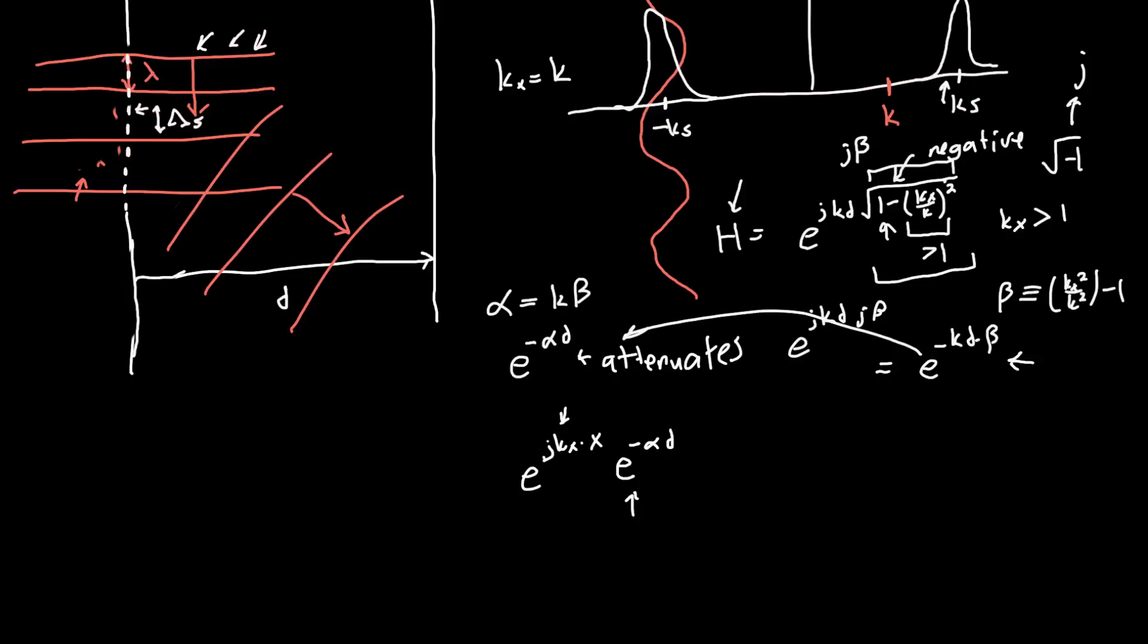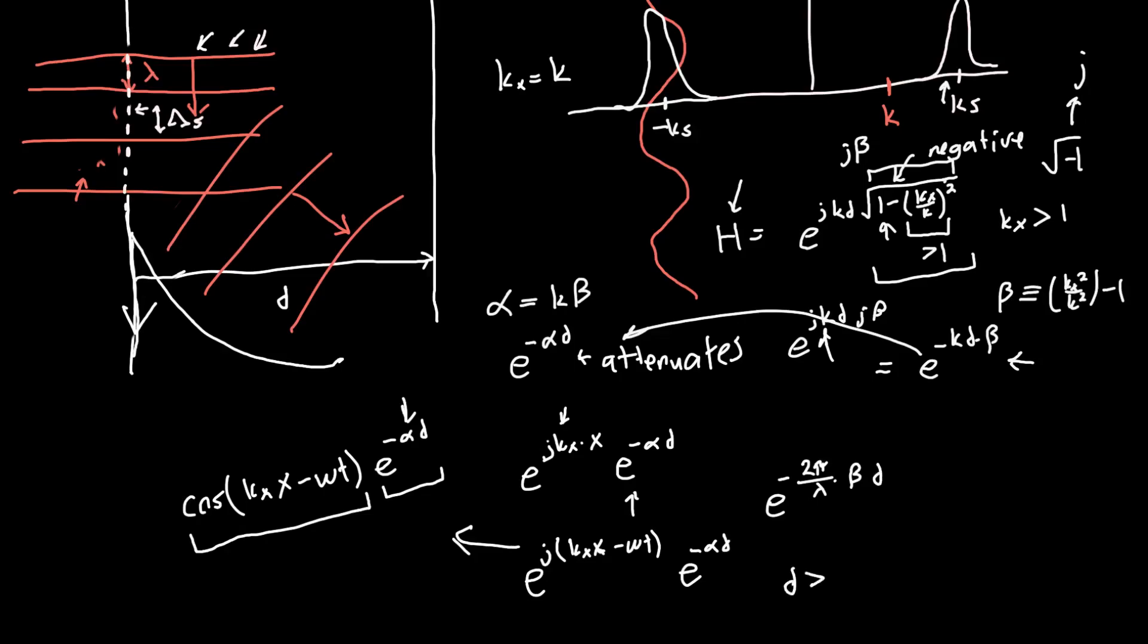And so if we were to write out the entire plane wave, this very high frequency plane wave, we could write it as e to the j kx times x, where kx can be very high frequencies. That's totally fine. But now instead of propagation in the z direction, we get e to the minus alpha d. So propagate by a distance d, attenuate the plane wave. And if we want to write this out in its entire form, so let's say we want to add back in the time dependence, this becomes e to the j kx times x minus omega t times e to the minus alpha d, or even better, back into its real representation, cosine of kx times x minus omega t times e to the minus alpha d.